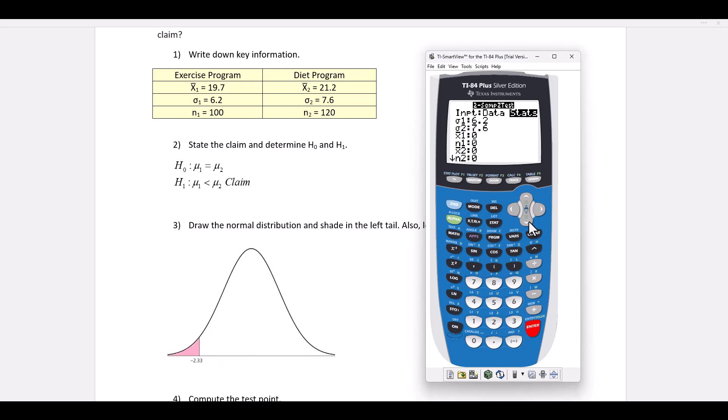Type in the first sample mean, 19.7. Type in the first sample size, 100. Type in the second sample mean, 21.2. Type in the second sample size, 120. Then select the less than option. Select calculate. We have computed the test point. It's negative 1.61.